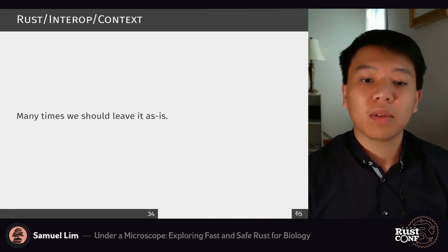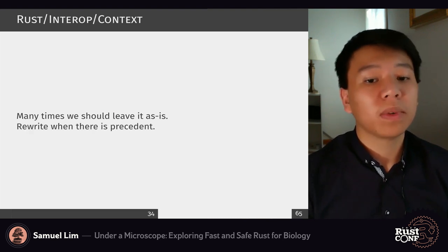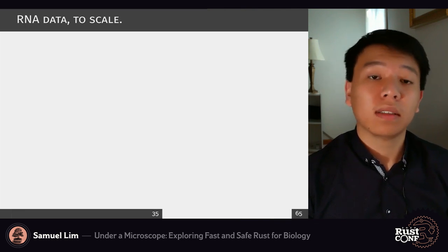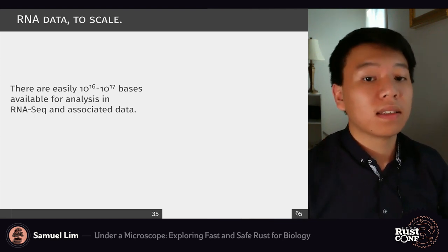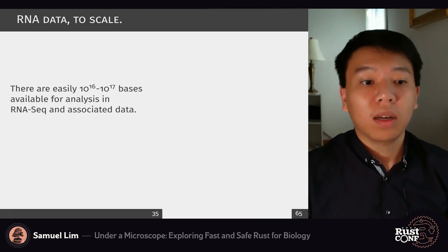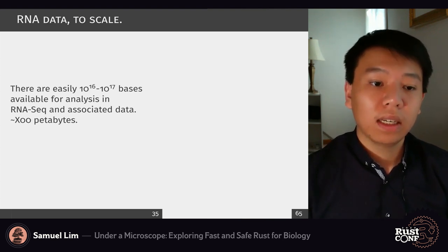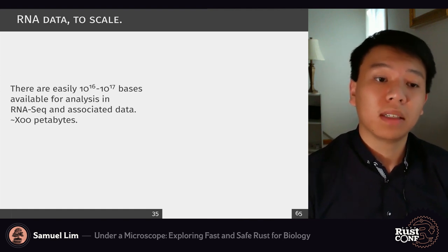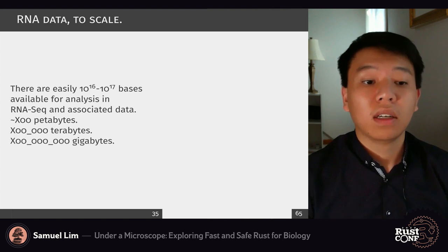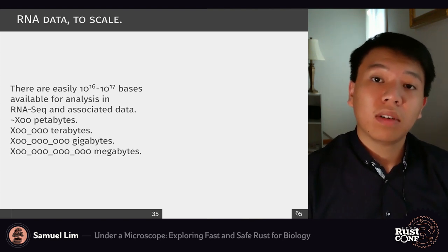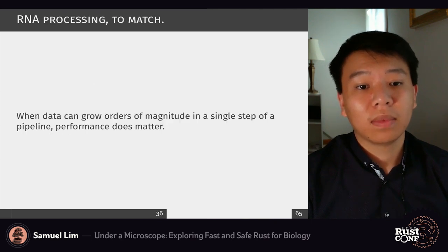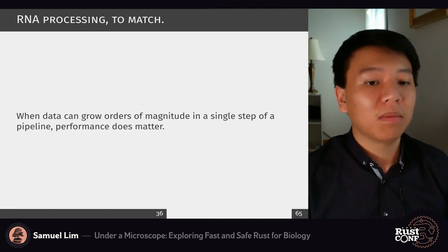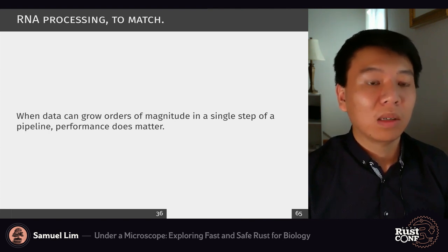Many times we should leave the abstraction layer as it is — there's no reason to go further unless we have precedent. And sometimes that precedent is very large. To scale: there are easily 10^16 to 10^17 bases in some of the more popular public databases for RNA-seq and associated data — more than 100 petabytes, or several hundred thousand terabytes, and it's continuing to grow. When data can grow orders of magnitude in size from a single step in the pipeline, performance does matter.